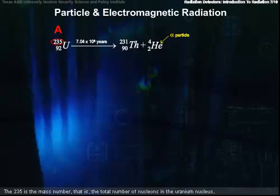The 235 is the mass number, that is, the total number of nucleons in the uranium nucleus. In this case, 92 protons and 143 neutrons. Likewise, for thorium, that has an atomic number of 90, and helium, with an atomic number of 2.